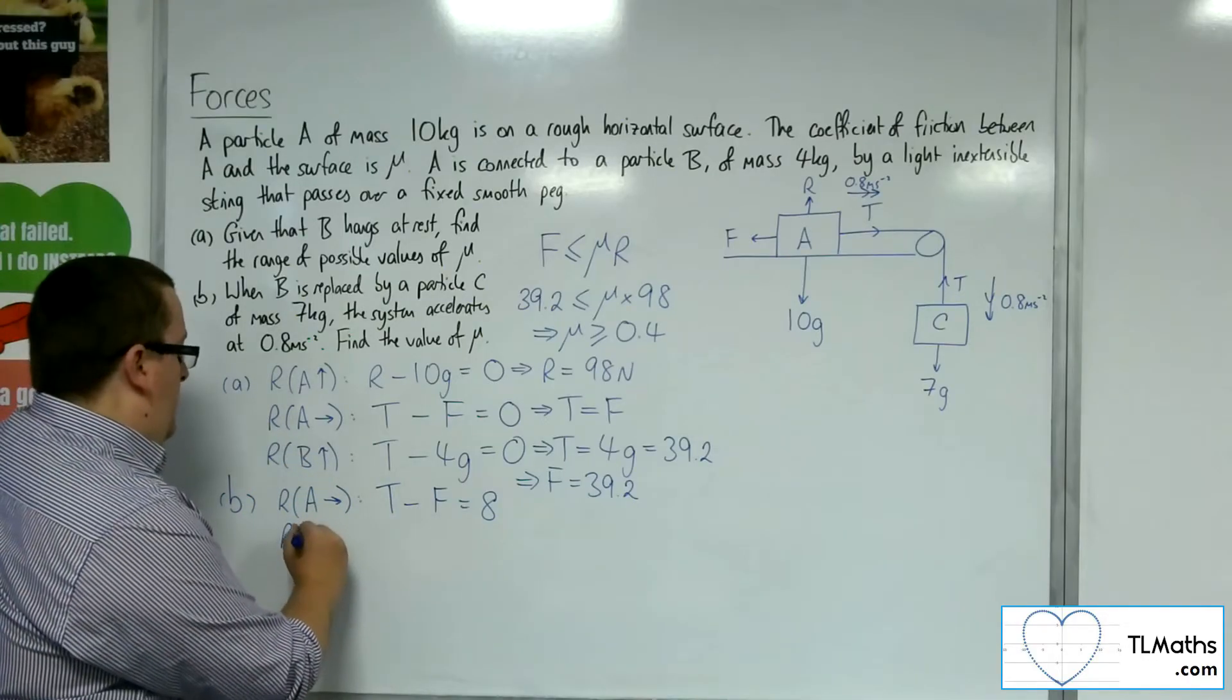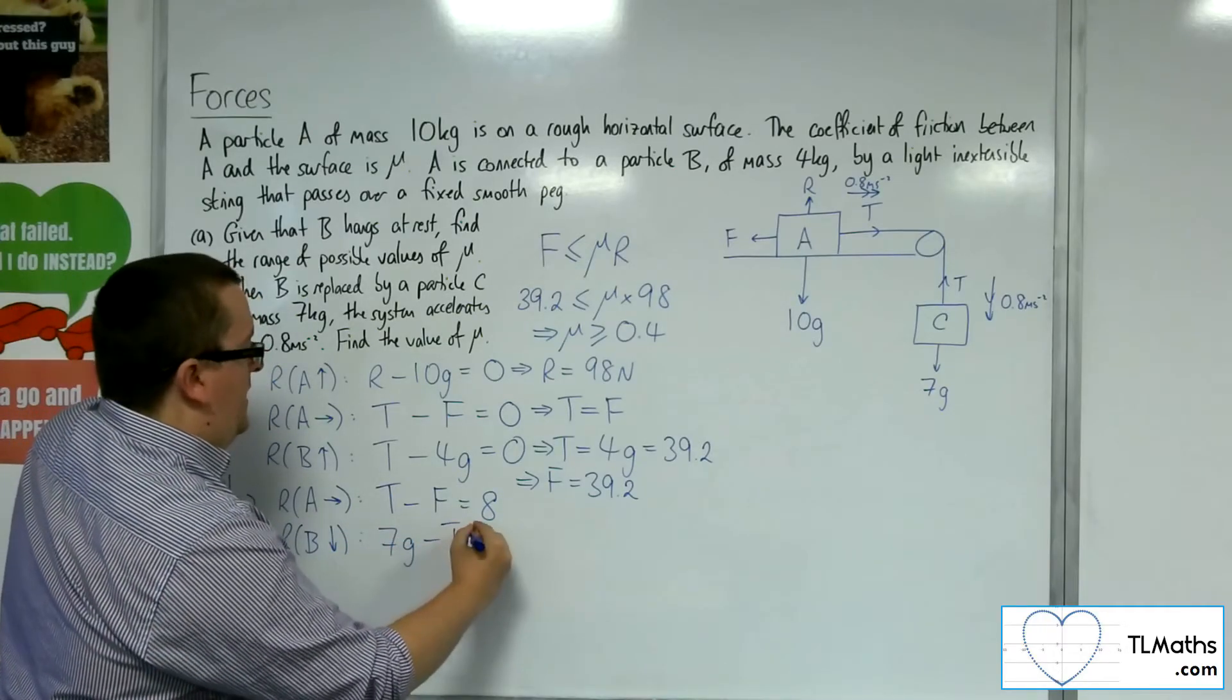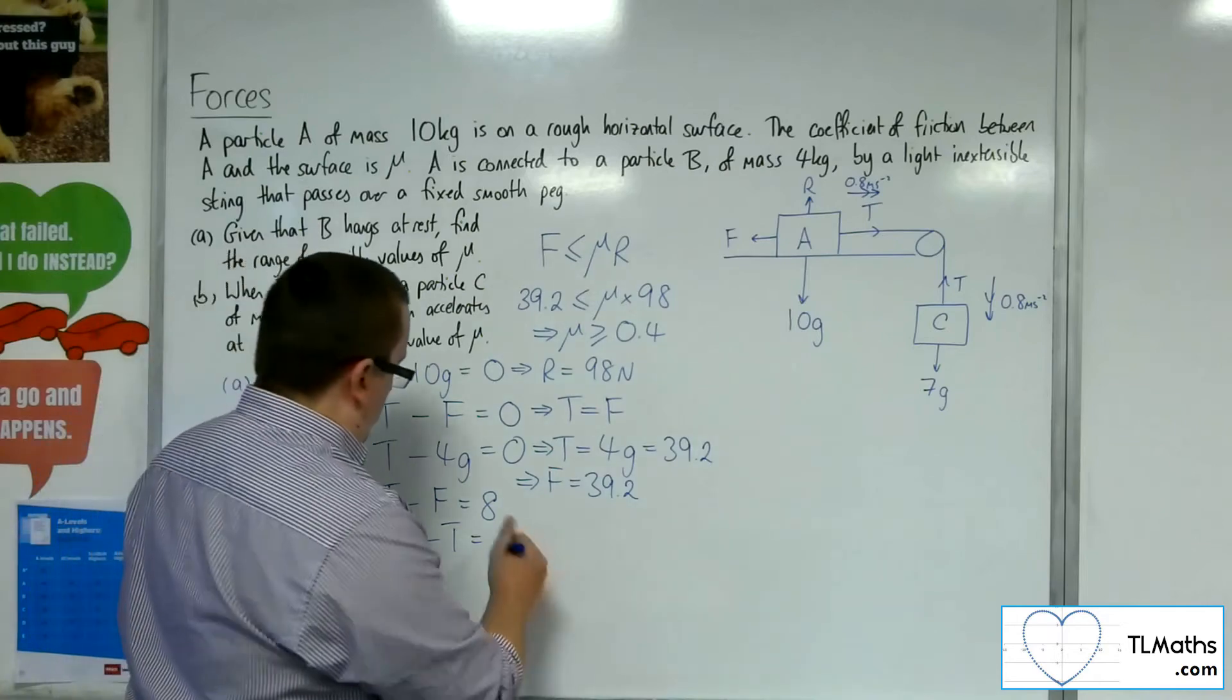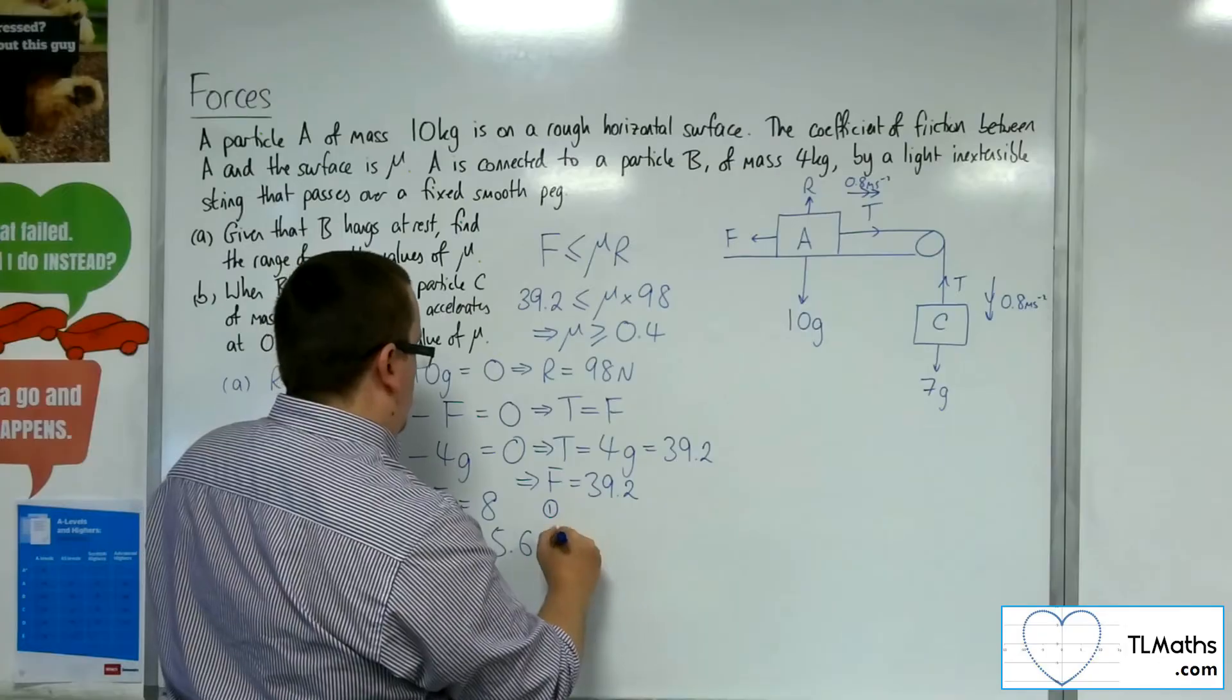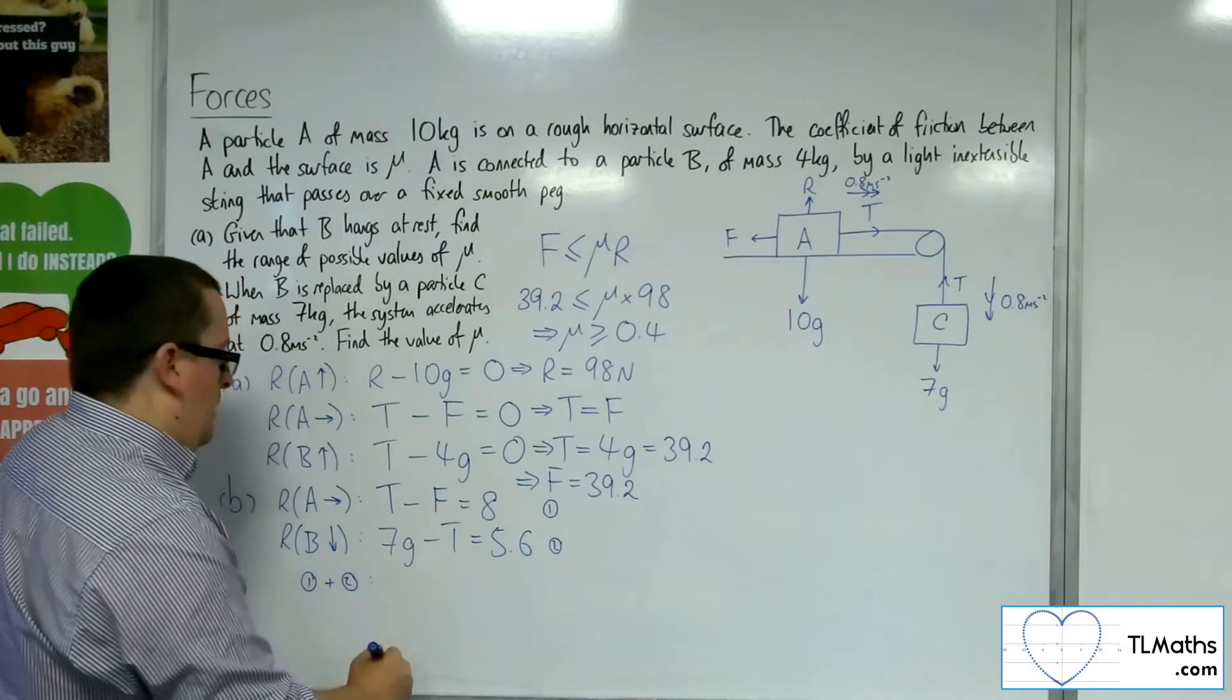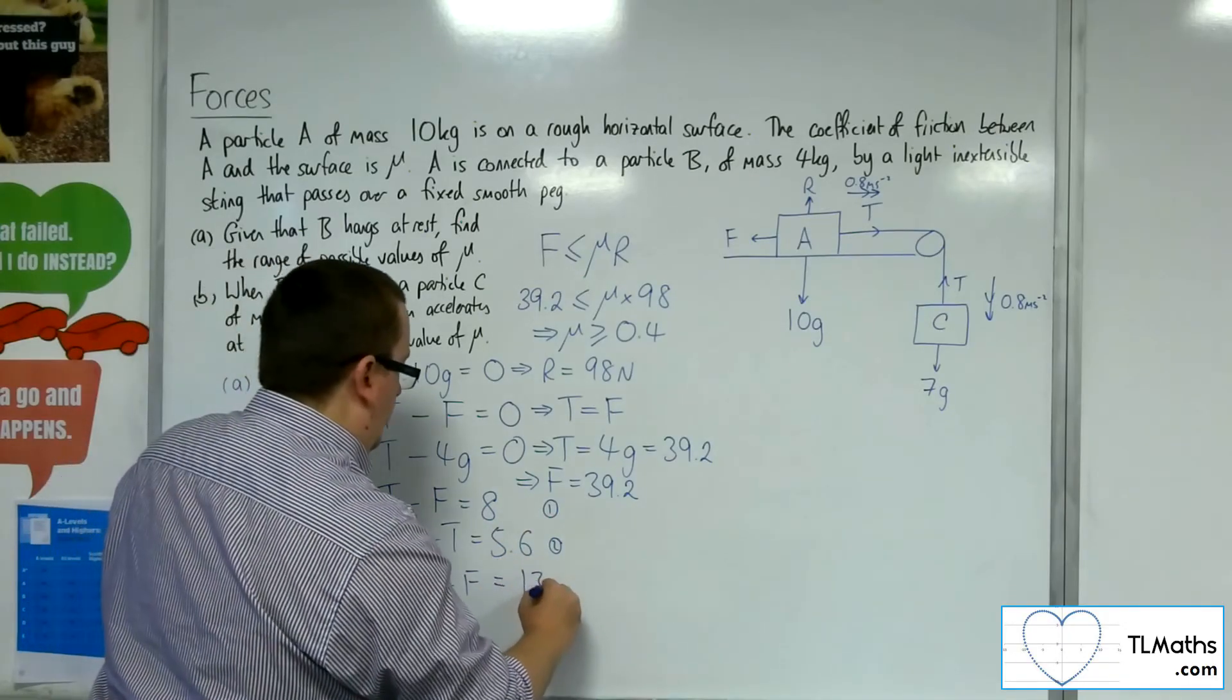Now, if I resolve B taking downwards as positive, I've got 7g take away T is equal to the mass 7 times acceleration 0.8. So 7 lots 0.8, 5.6. So here I now have two equations, 1 and 2. So if I add those two equations together, the T's will cancel, and I'll be left with 7g take away F is 8 plus 5.6, so 13.6.